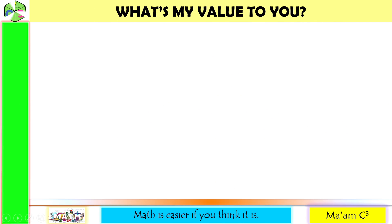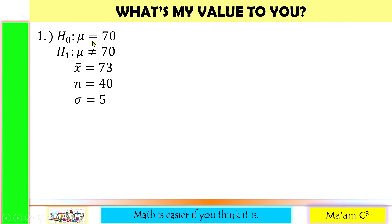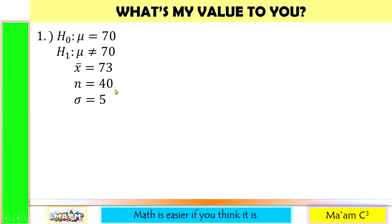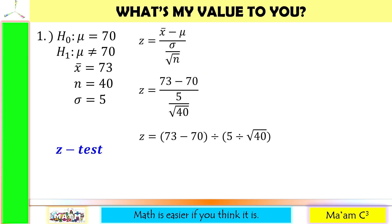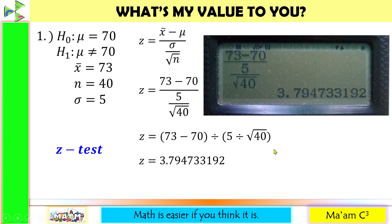Let's have an activity: What's my value? Number 1 — null hypothesis: mu equals 70; alternative hypothesis: mu is not equal to 70; sample mean is 73; sample size is 40; sigma equals 5. Since we are given the population standard deviation and sample size is greater than 30, we use Z-test. Substituting: x-bar is 73, mu is 70, sigma is 5, n is 40. Encoding this in the calculator gives Z equal to 3.795 (rounded to the nearest thousandths, since 7 is greater than 5).